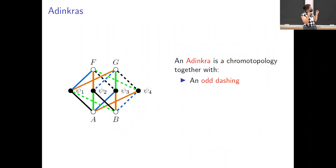To build a full Adinkra, I also need to throw in an odd dashing. Essentially, if I do the same operator, you know, if I go green, blue, green, blue again and get back where I started, that picks me up a negative sign somewhere in here. The odd dashings tell me where to put the negative signs. They are not going to matter for the rest of this talk.